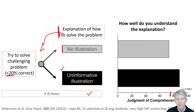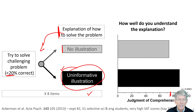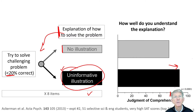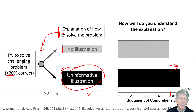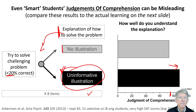But importantly, I draw your attention to what happens when they are given uninformative illustrations in addition to the explanation for how to solve the problem — they thought they understood the problem better. This is a distinct increase in their judgment of comprehension. I draw your attention to the fact that this increase in judgment of comprehension is caused by the uninformative illustration. So even smart students' judgments of comprehension can be misleading.